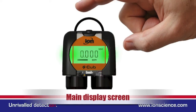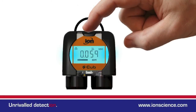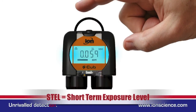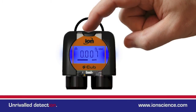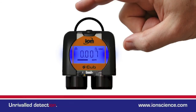The main screen displays the gas level in PPM. Repeatedly pressing the button scrolls through the various screens. The STEL and TWA screens show ongoing calculated levels of personal gas ingestion.